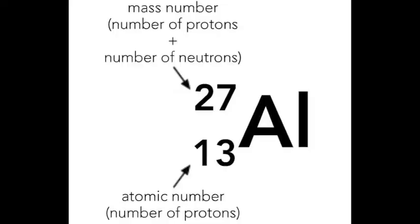For many years, an element's atomic number was just its position on the periodic table. Then, in 1913, scientists worked out that an element's atomic number was the number of protons in its atoms.